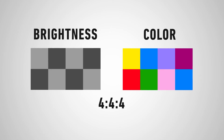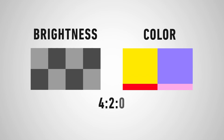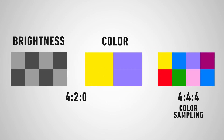In 4:4:4, all brightness pixels as well as all color pixels are captured. 4:2:2 means the brightness value is represented completely, but every second color pixel from the first row and every second pixel from the next row is sampled. 4:2:0, however, means the brightness is captured completely, whereas only every second pixel from the first row and no pixels from the next row are sampled. This is why videos can be compressed without losing too much visual information, because our eyes react to contrast much more than to color — so much more information on the color channel can be sacrificed to achieve heavy compression.